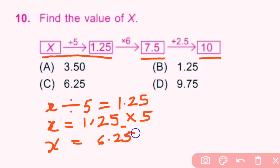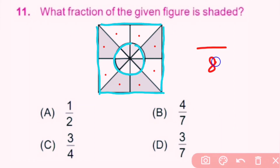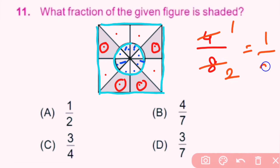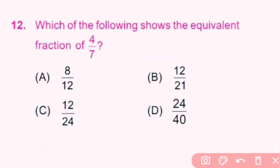Question number 11: What fraction of the given figure is shaded? In the given figure there are two parts; in each part there are total 8 parts and out of 8, 4 parts are shaded. 4 out of 8 simplifies to 1 by 2. The shaded fraction is 1 by 2. A is the correct answer.